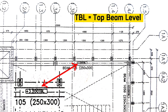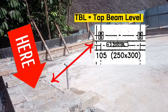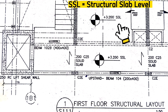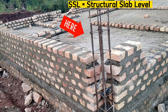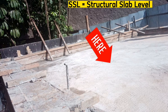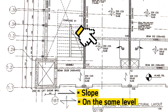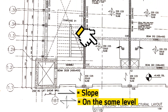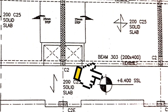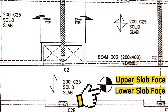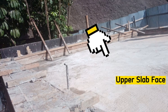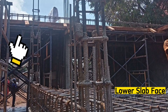This symbol means the top beam level at this level here. This means the structural slab level. This indicates a slope here, and this symbol means that this area is on the same level. This indicates the upper slab face and this indicates the lower slab face — for example, here this is the upper slab face and this is the lower slab face.